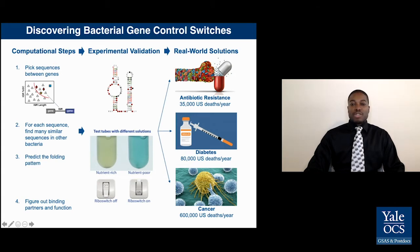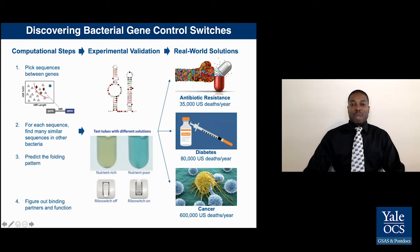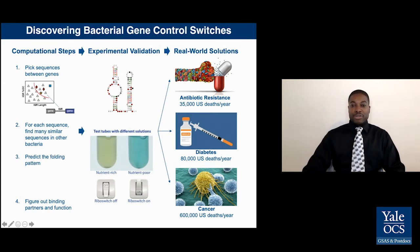They can all be addressed by improving our understanding and manipulation of bacteria. My research does this by using sequence analysis to discover bacterial riboswitches, which switch on or off bacterial genes. By using a computational pipeline, I discover likely switches that I give to experimentalists to validate.